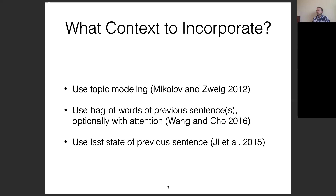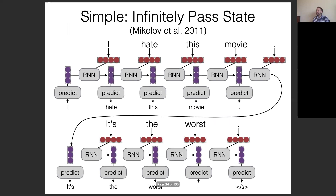Another approach is to use the last state of the previous sentence. This is similar to passing the hidden state between sentences, but instead of initializing the hidden state of the RNN with the last state of the previous sentence, you pass the hidden state throughout the entire time.